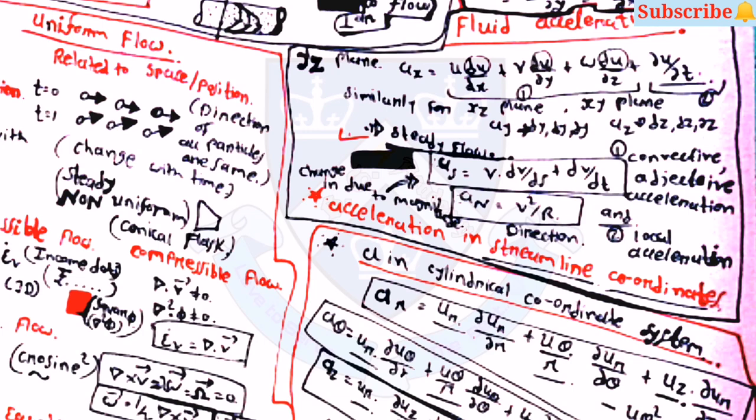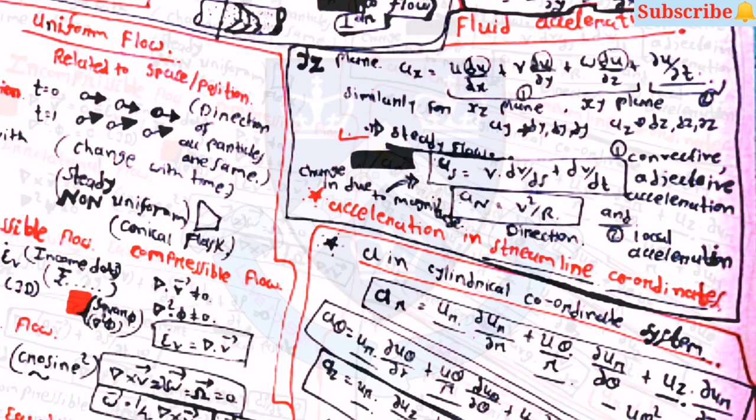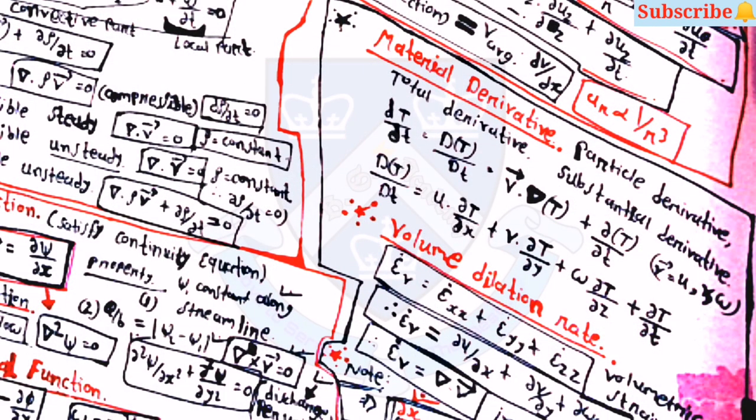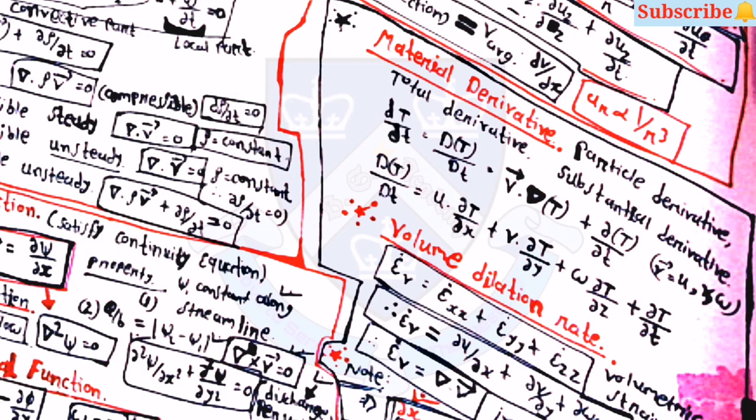Fluid acceleration equations are given for the x-plane. Acceleration in streamline coordinates: normal acceleration an equals v-squared by r, and tangential acceleration as equals v into dv by ds plus dv by dt. The convective (advective) acceleration is as and local acceleration is an. There are also three equations for acceleration in the cylindrical coordinate system. The material derivative is d-T by dt equals u del-T by del-x plus v del-T by del-y plus w del-T by del-z plus del-T by del-t.